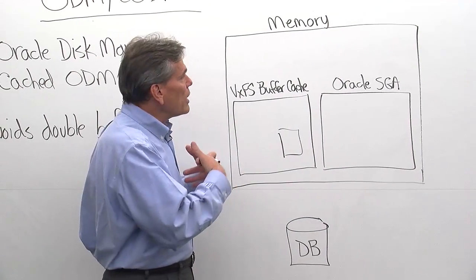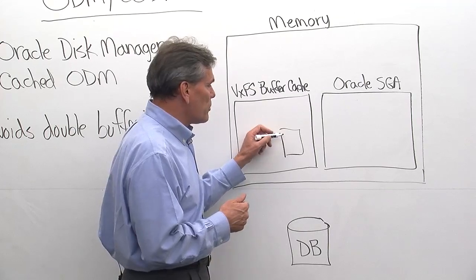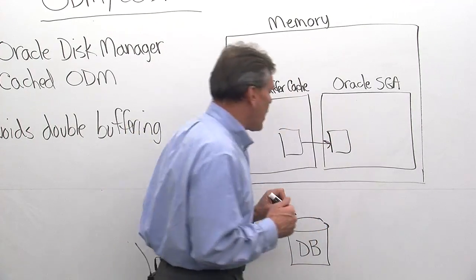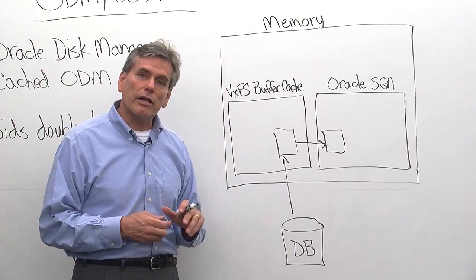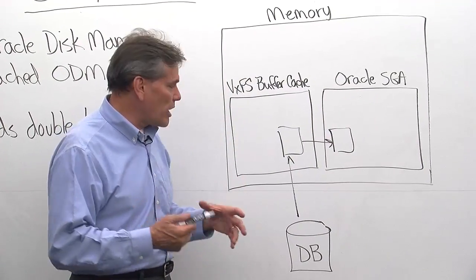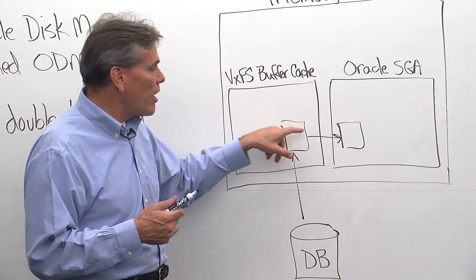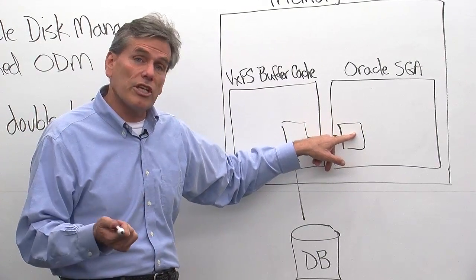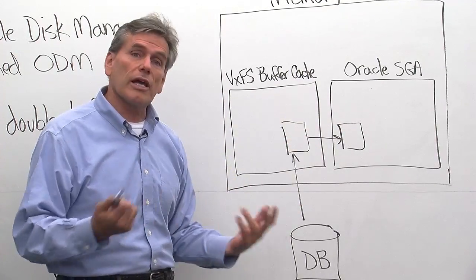In Oracle's context, what that means is we pull it into memory and then we give it over to them. That's double buffering, because Oracle likes doing its own memory management. So the fact that we have it in memory here and then have to basically write it over to memory in Oracle's SGA — that's wasting memory as well as slowing down performance.